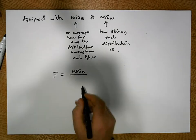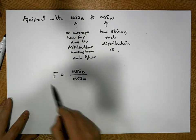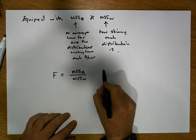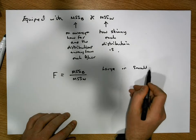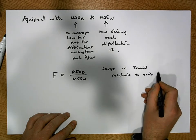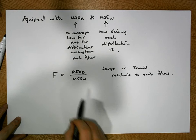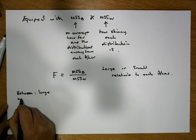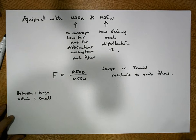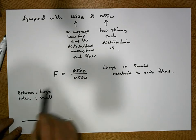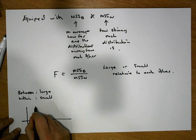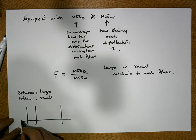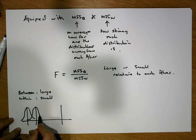So the question is: how do we interpret this test statistic? Let's consider whether these values are large or small relative to each other. Take the scenario where the between measure is large and the within measure is small. That means on average the groups are far apart from each other, and on average each group distribution is skinny.